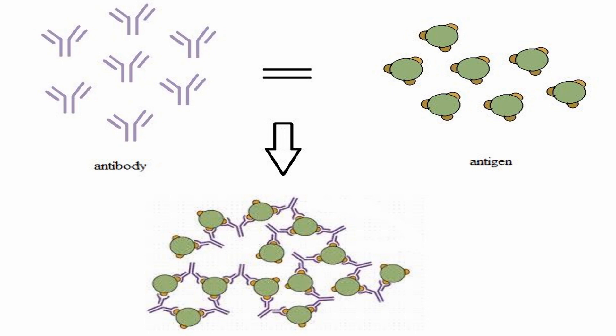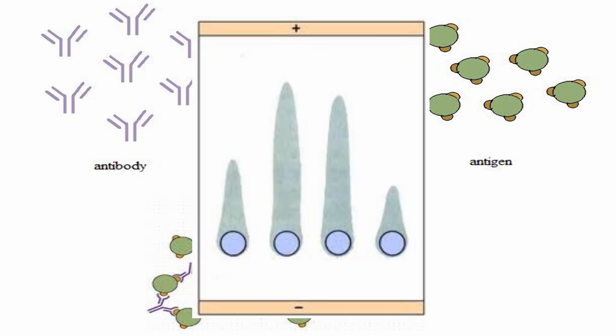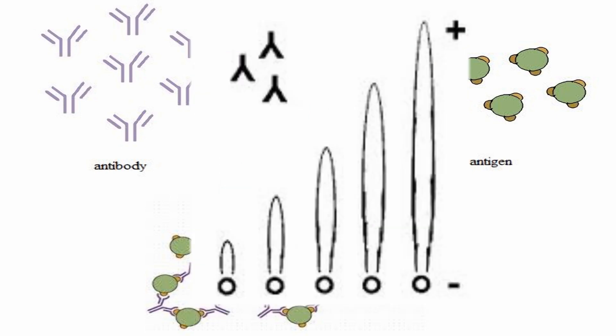Antigen and antibody move towards each other. It is immunodiffusion. When it reaches the equivalence point, they precipitate by forming antigen and antibody complex. To increase the rate of reaction, this complex is subjected to electric current. This is electrophoresis.